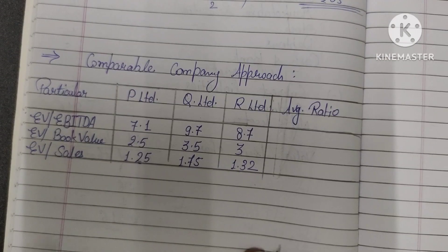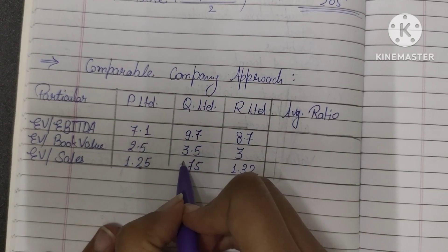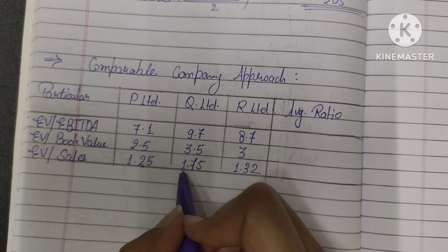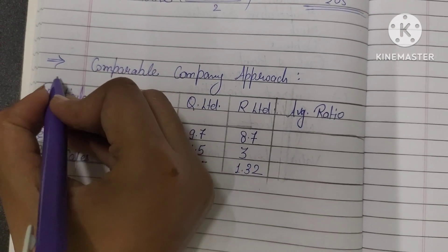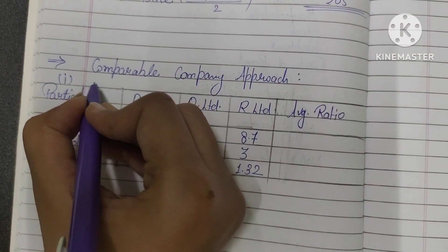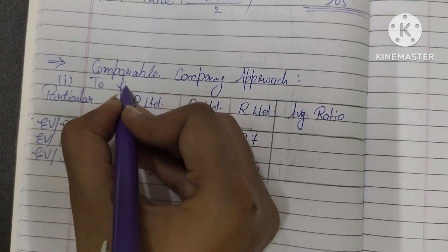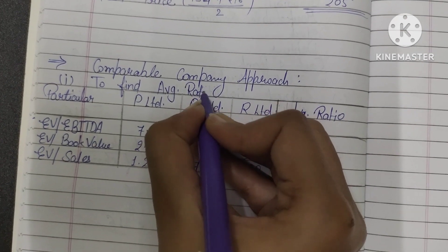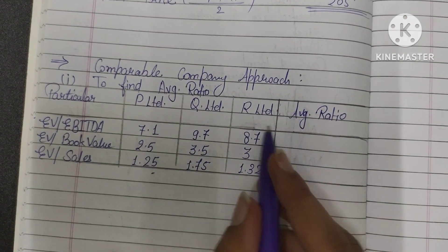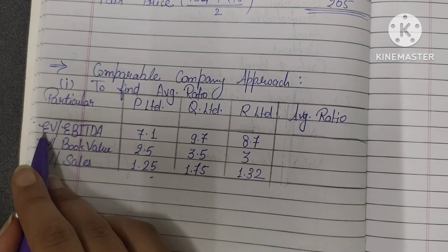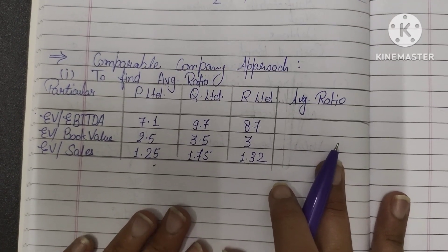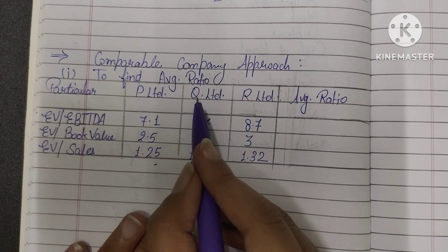Our first step is to calculate market value and average ratio. It is our first step to find average ratio. Then what will we find? Average ratio. In the question, we were given enterprise value to EBITDA. So average value, I told you what to find.